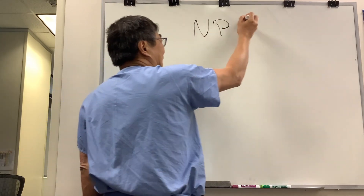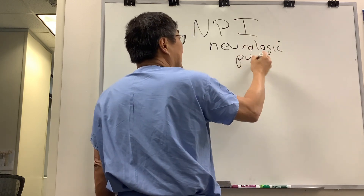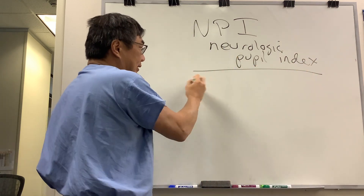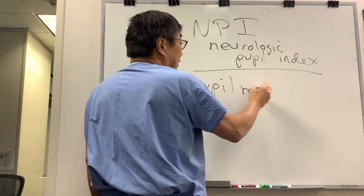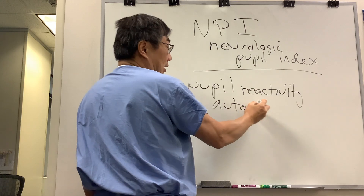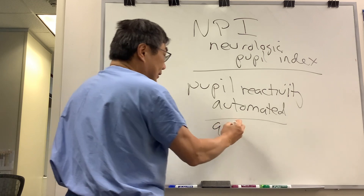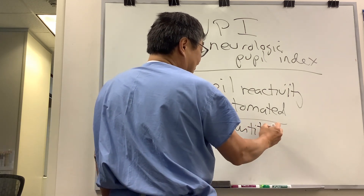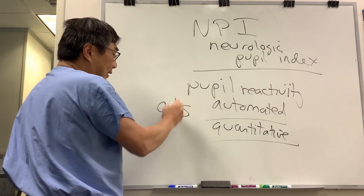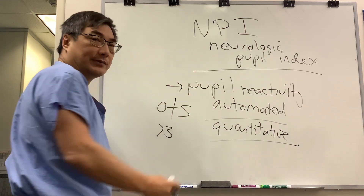Someone wanted to know about NPI, which is the neurologic pupil index. Measuring pupil reactivity is not a new thing in neuro-ophthalmology. The new thing about the NPI is that it's automated — a machine provides an automated quantitative assessment of pupillary reactivity. It's a scale from 0 to 5, and anything above 3 is normal, with the machine measuring the pupil reaction.